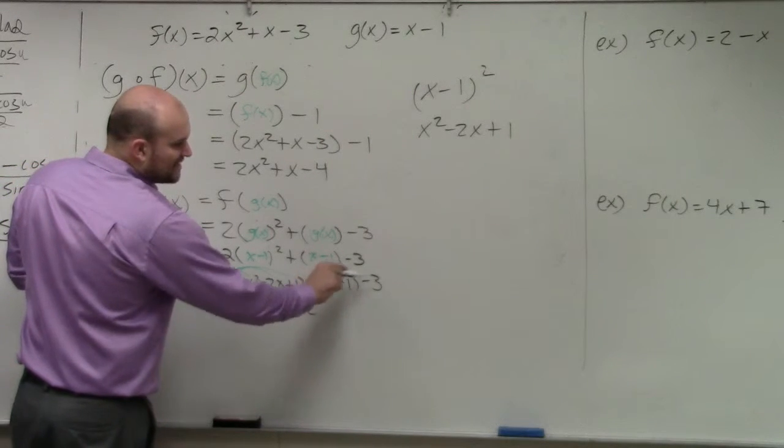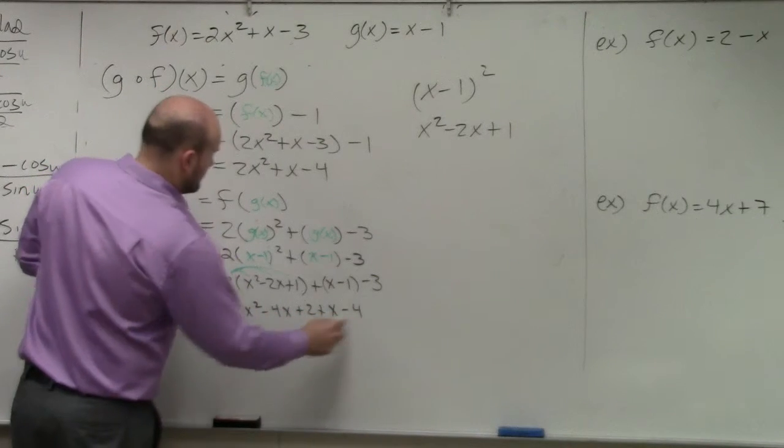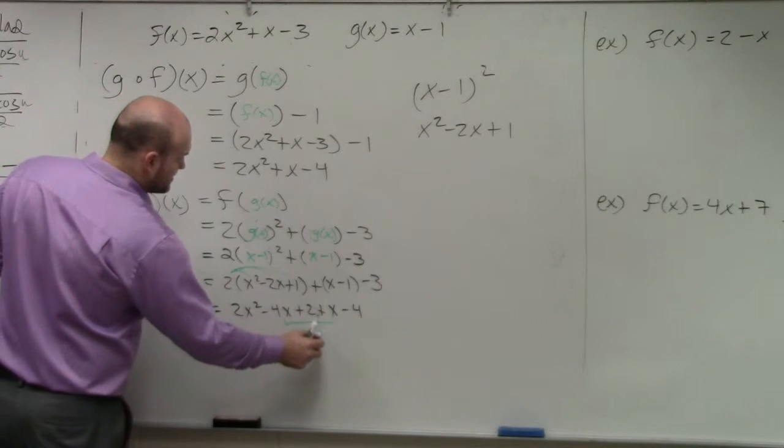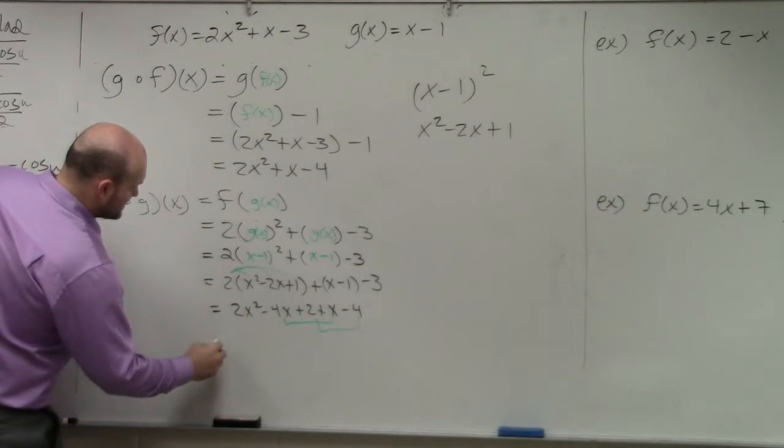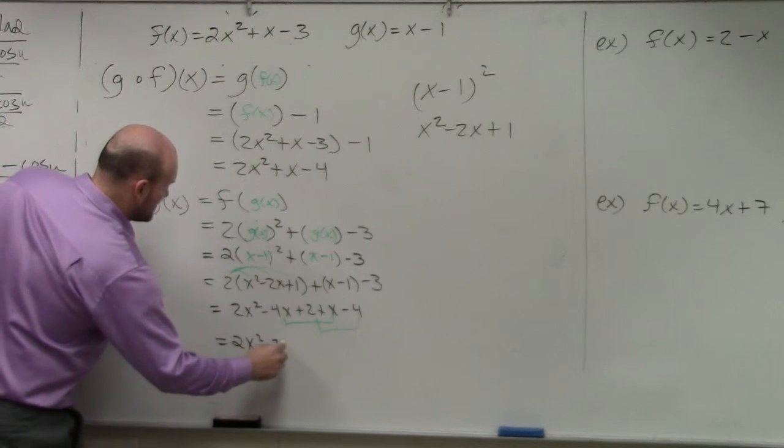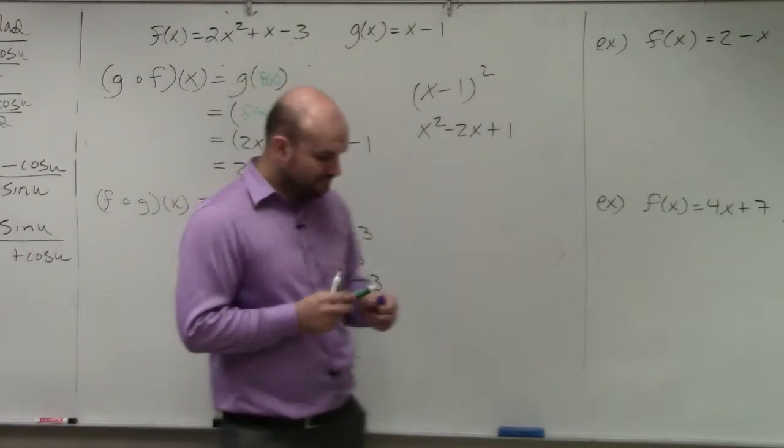Here, I can do minus 1, negative 1 minus 3, which would be a negative 4. And then I just combine my like terms. I can combine the x and the x and the number and the number. So my final answer is 2x squared minus 3x minus 2.